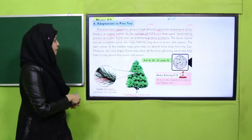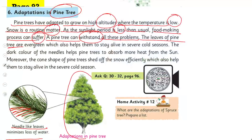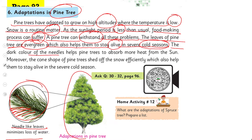The leaves of pine trees are evergreen — no matter how much snow or heat, whether summer or winter, their leaves always remain green. This helps them stay alive in severe cold seasons. The dark color of the needles helps pine trees absorb more heat from the sun. Moreover, the cone shape of pine trees sheds off snow efficiently, helping them survive in severe cold.